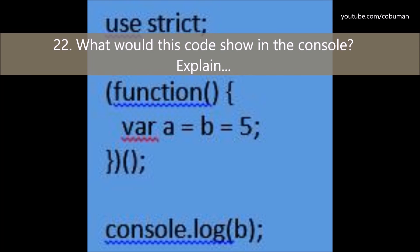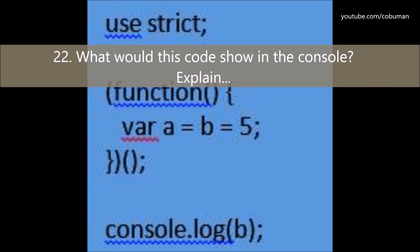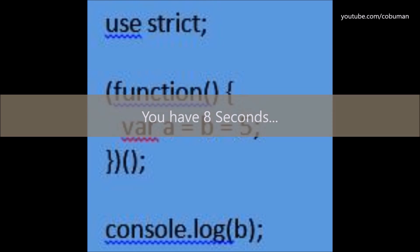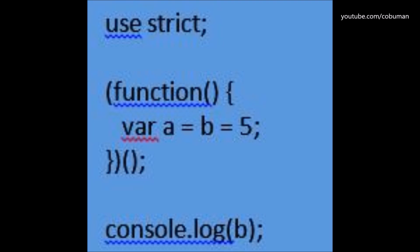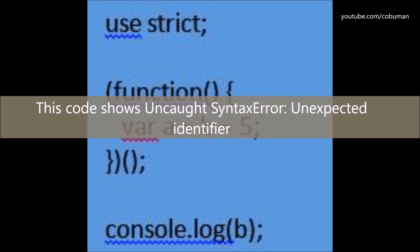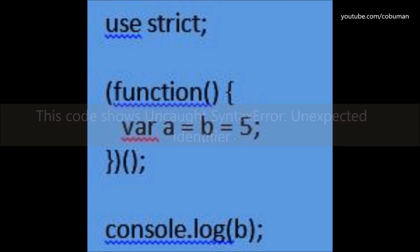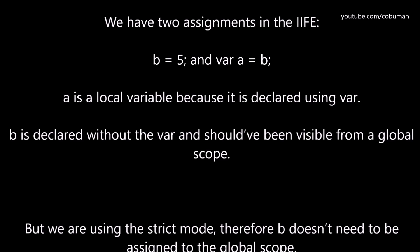Question number twenty-two: What would this code show in the console? This code shows 'Uncaught SyntaxError: Unexpected identifier.' We have two assignments in the IIFE: b equals five and var a equals b. 'a' is a local variable because it is declared using var. 'b' is declared without var and should have been visible from global scope, but we are using strict mode, therefore b doesn't need to be assigned to the global scope.